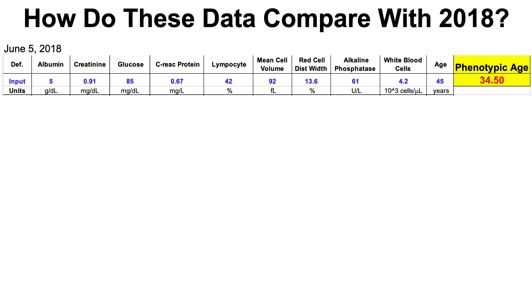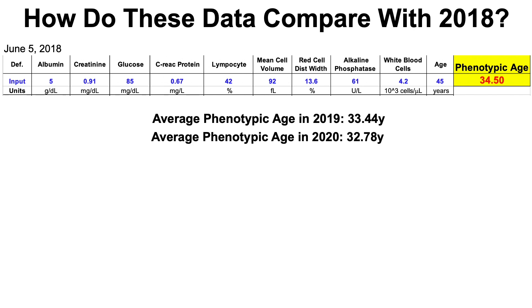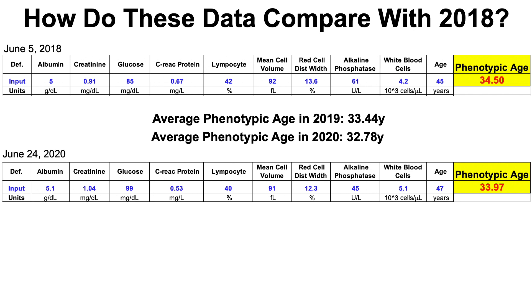Two years ago my phenotypic age based on blood test variables was 34.5. In 2019 it was 33.4, and in 2020 so far it's 32.8 — suggesting I've actually reduced my biological age by about a year and a half since 2018. Comparing June 2018 to June 2020 specifically, two full years of chronological age have passed, yet I've reduced my phenotypic age by half a year. One contributing factor is reduced C-reactive protein, and I'd say I'm on the right track.